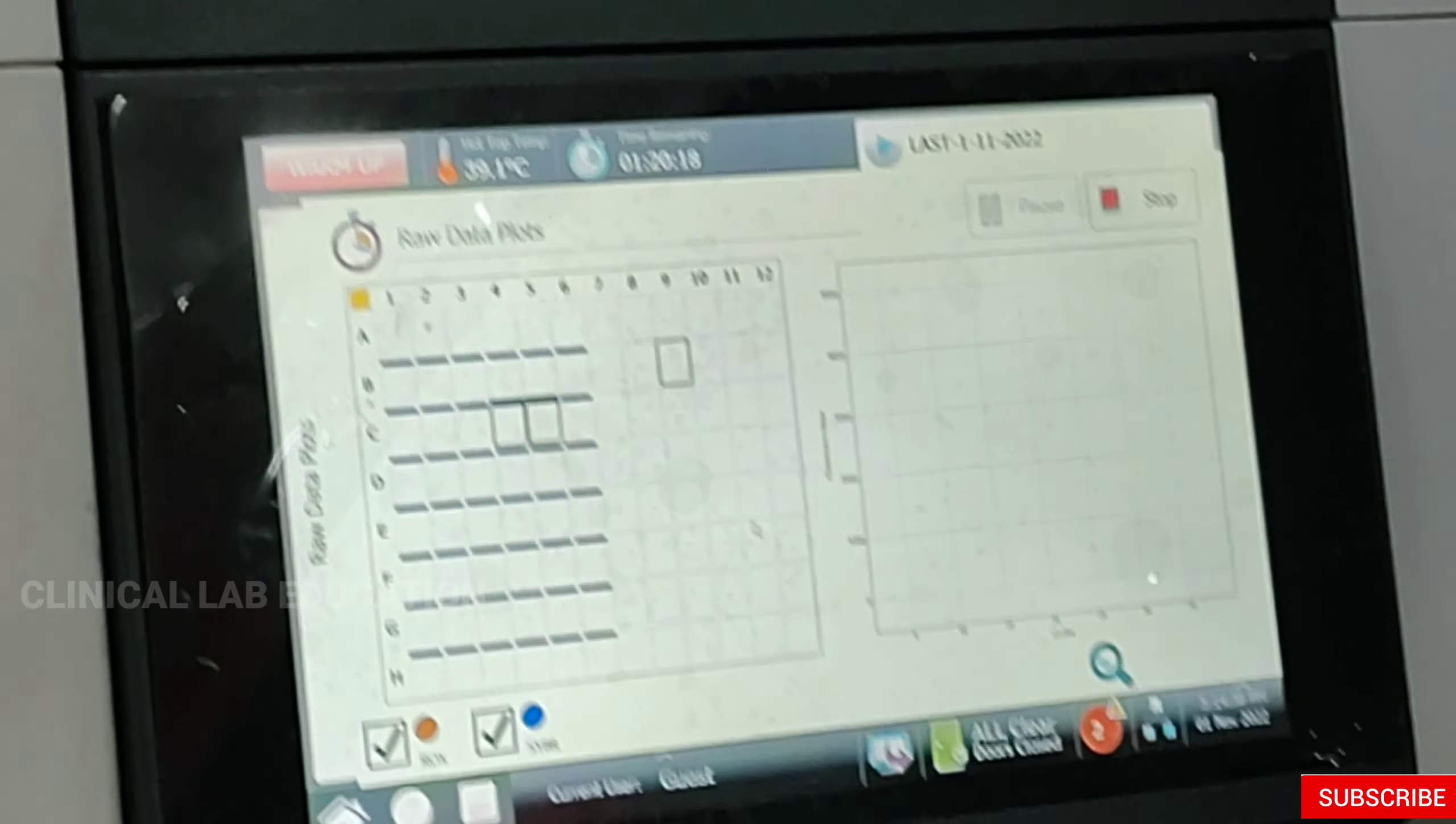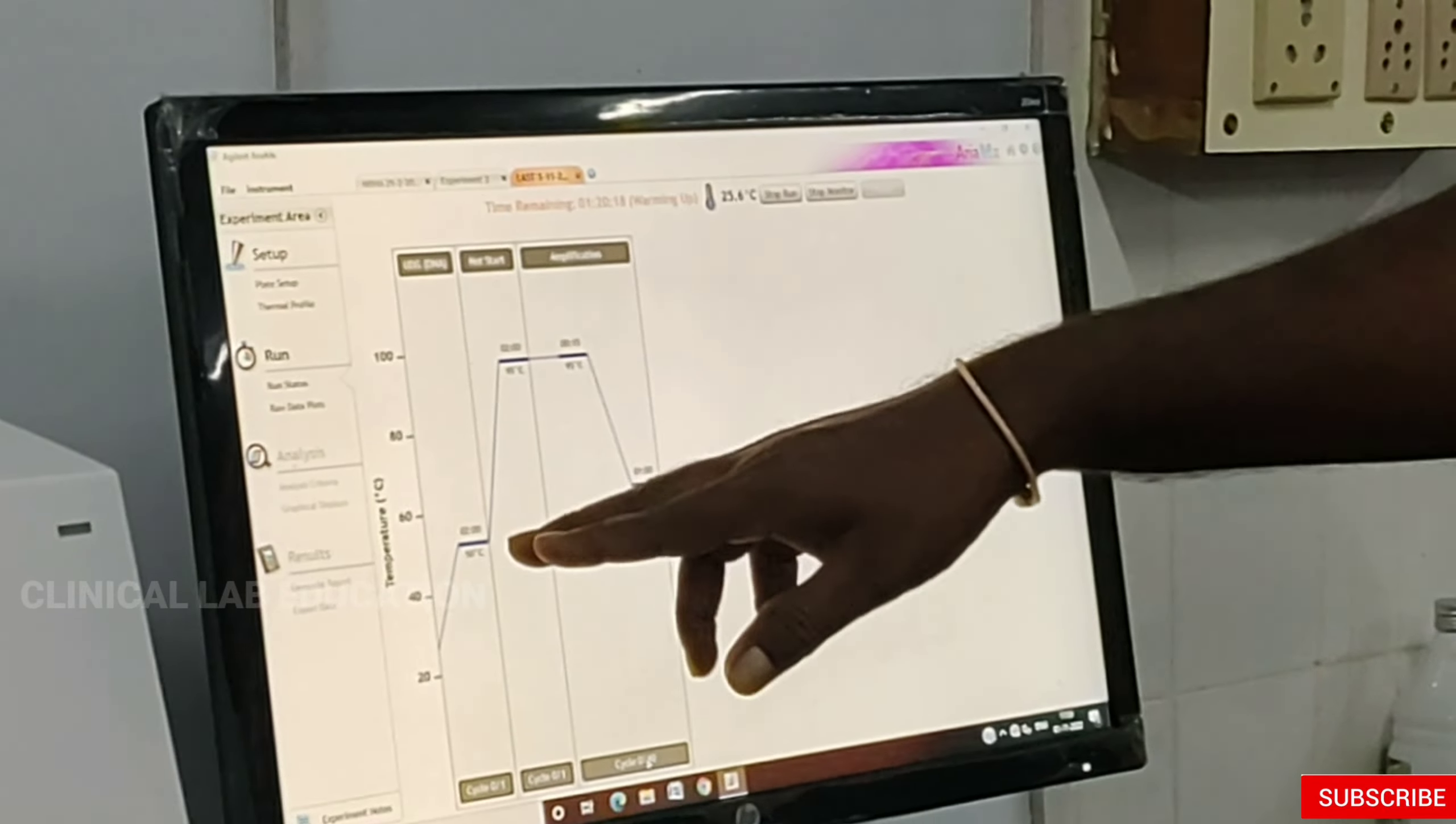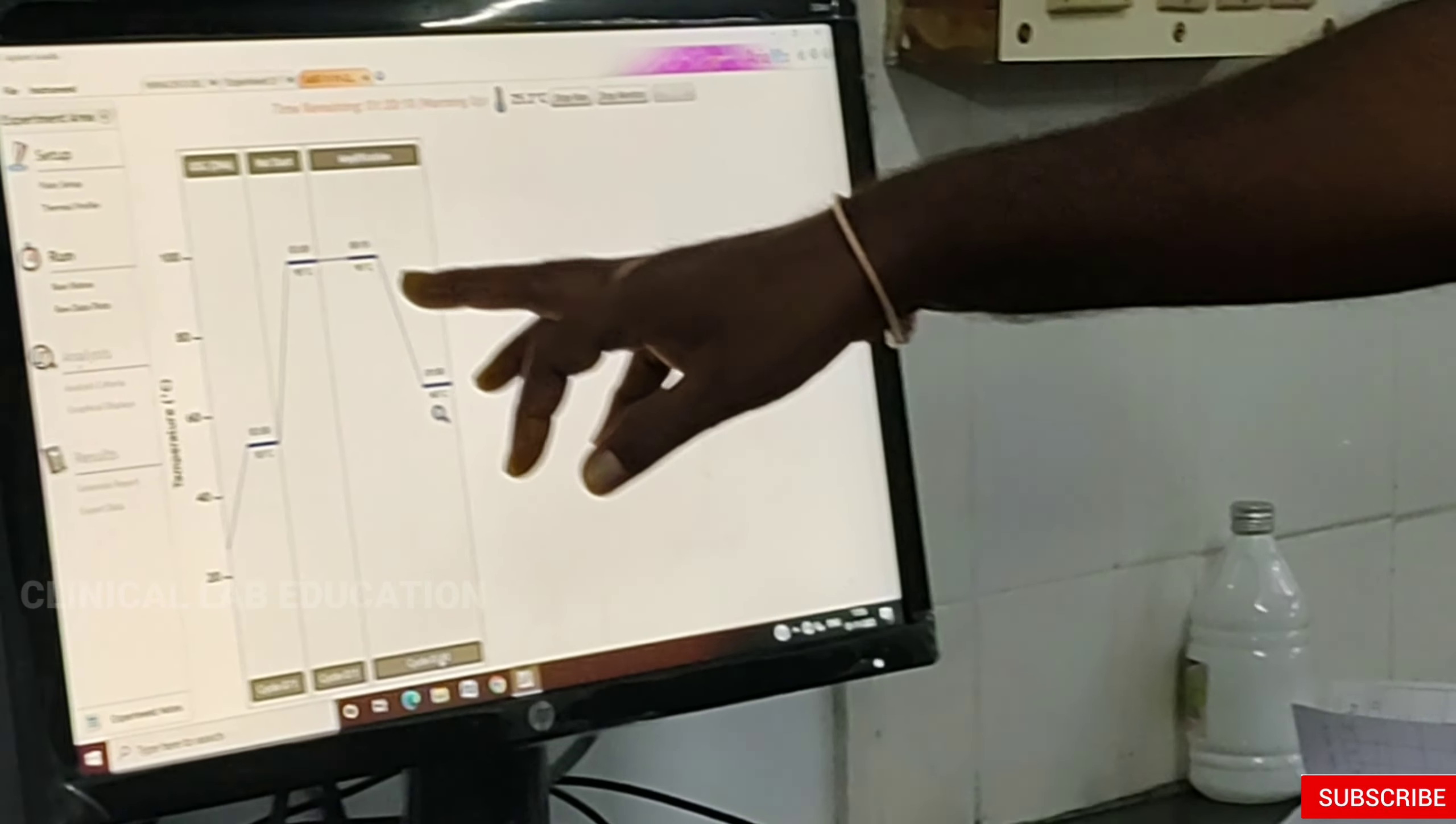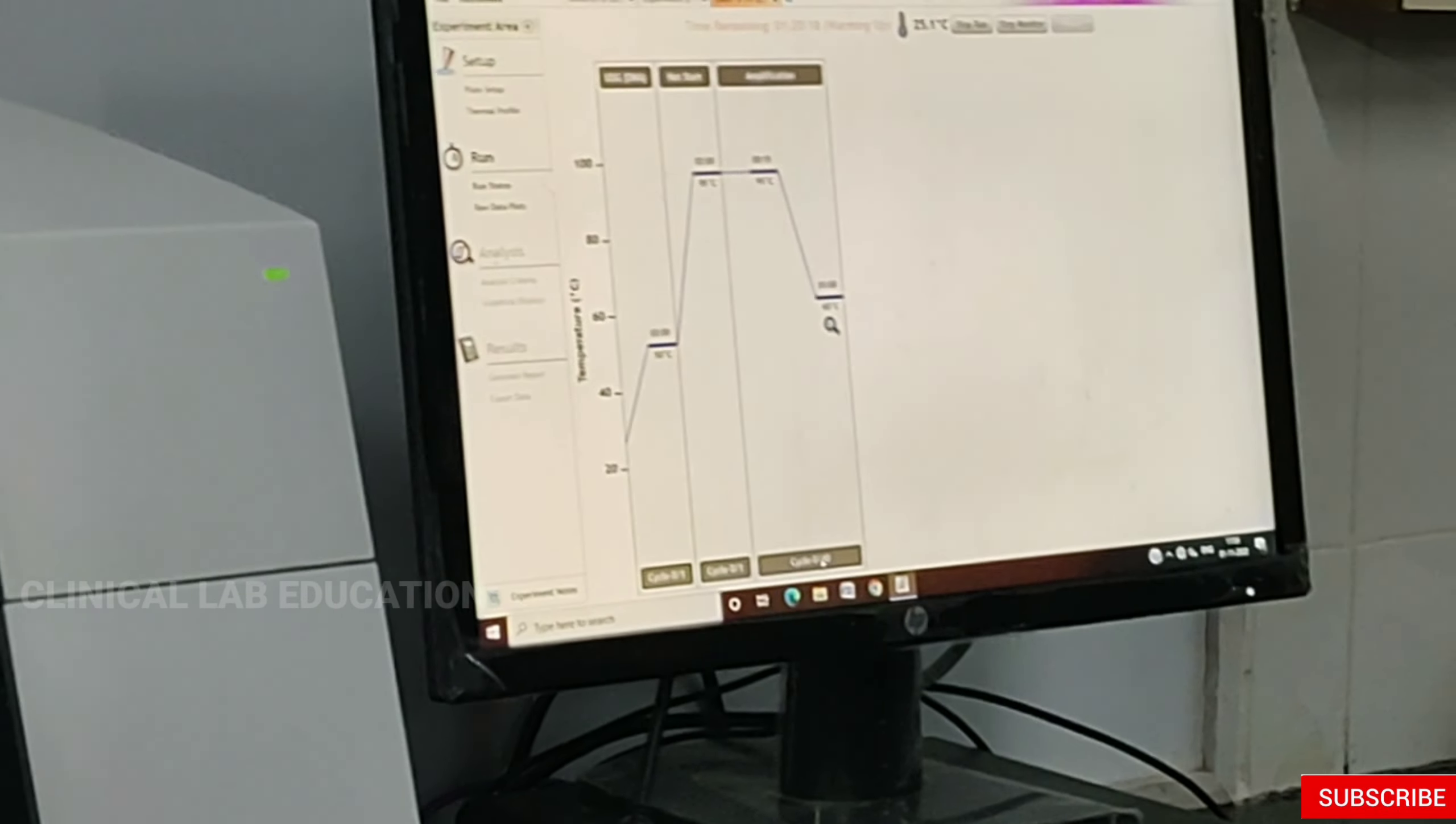One hour 20 minutes total run time. The temperature is going up: 22.7, 23.7, 24.8 degrees. It's warming fast, up to 50 degrees for UDG activation. It will take two minutes to reach 50, then two minutes at 95, then 15 seconds at 95 for 40 cycles. That means 15 seconds times 40 cycles. After one hour 20 minutes, it automatically stops and saves.